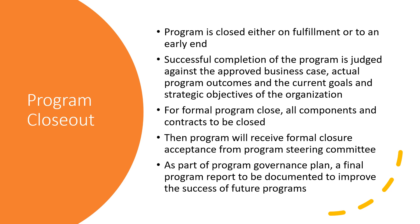For a formal program closure, you need to close all the components within the program and complete all contracts formally before you can close the program itself. The program will receive formal closure acceptance from the program steering committee, which holds governance authority after closure of all components and contracts. As part of the program governance plan, a final program report also needs to be documented to improve the success of future programs.